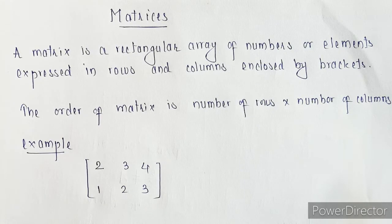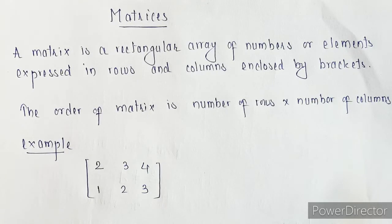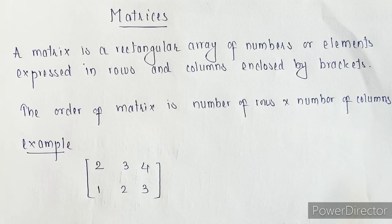It's similar to a determinant, which we have already discussed. Determinants are elements or numbers enclosed in vertical lines, whereas in matrices, numbers or elements are enclosed in brackets.